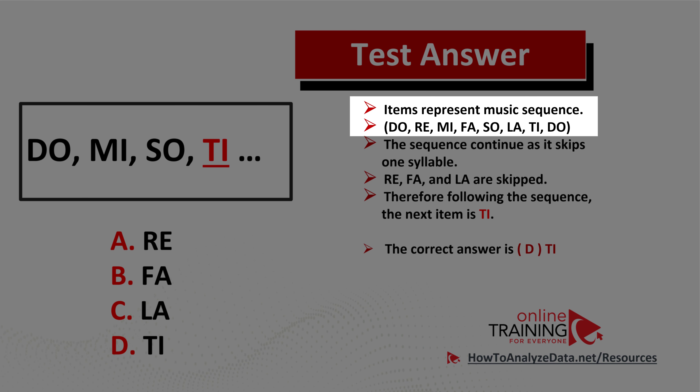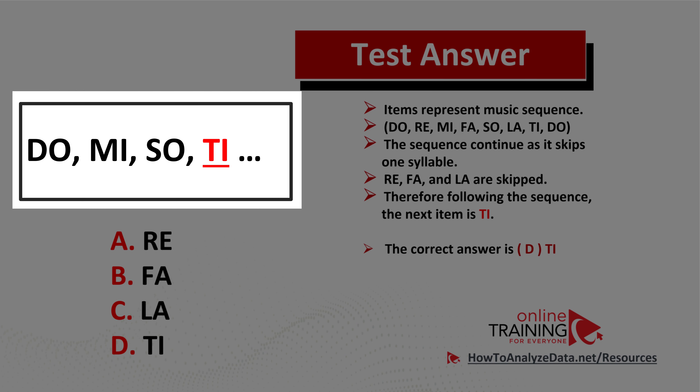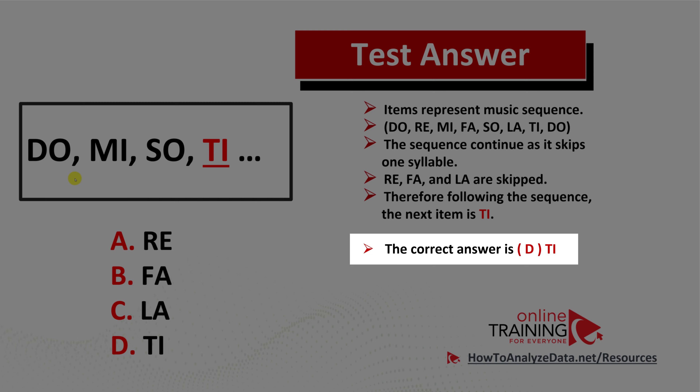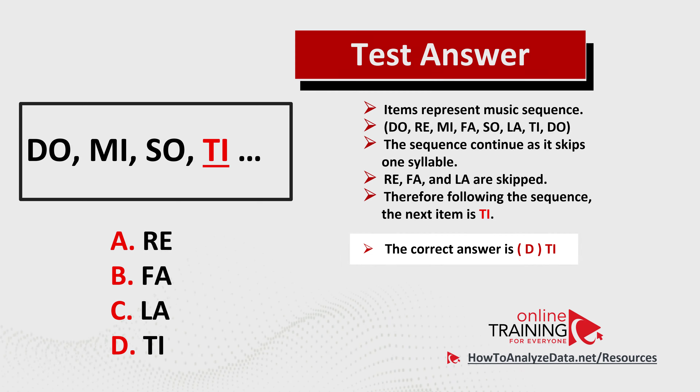The items represent a music sequence: do, re, mi, fa, so, la, ti, do. Looking at the sequence, re, fa, and la are skipped, so the next item in the sequence will be ti. The correct answer here is choice D, ti. Hopefully you've nailed this question and now know how to answer these types of questions on the test.